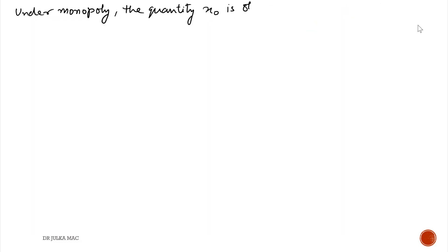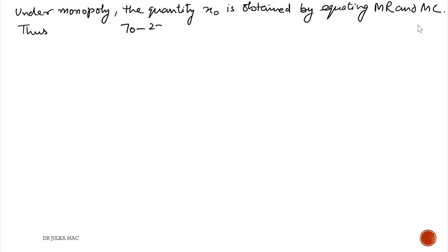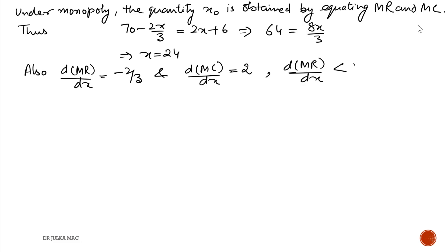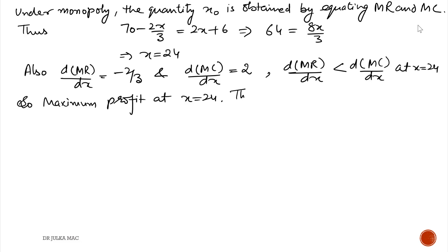Under monopoly, the quantity x0 is obtained by equating MR and MC. So 70 − 2x/3 = 2x + 6. After simplifying, x = 24. The derivative of MR is −2/3 and the derivative of MC is 2; since d(MR)/dx < d(MC)/dx at x = 24, maximum profit is obtained at x0 = 24. Thus p0 = 70 − 24/3 = 62.